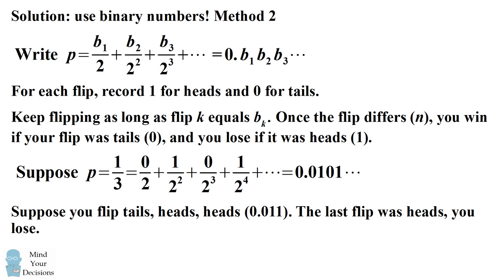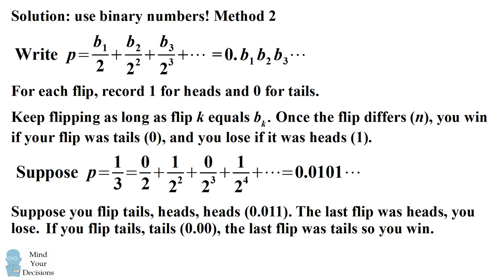If instead we flipped tails, tails, that would mean our second toss was different from the binary expansion of 1 third. And in this case, the last flip differed as a tails. So in this case, we would win the game.